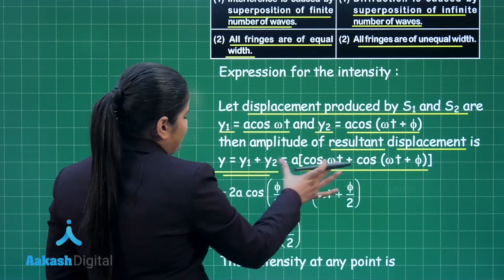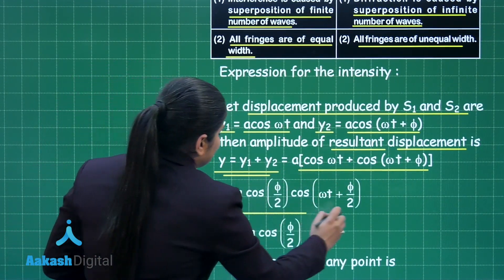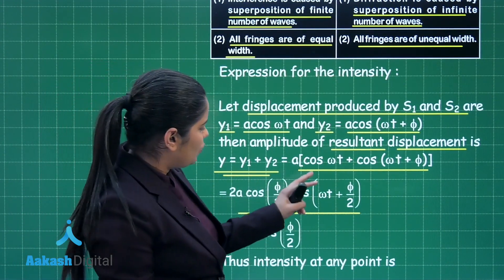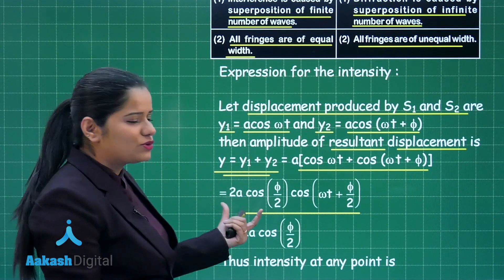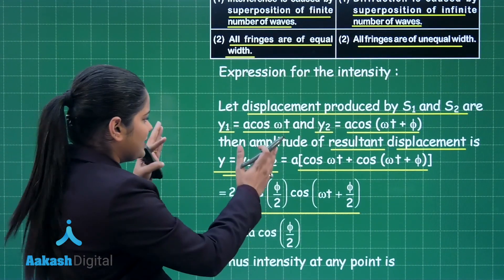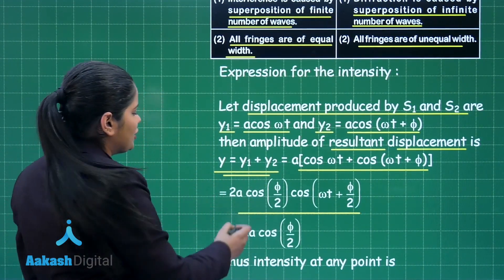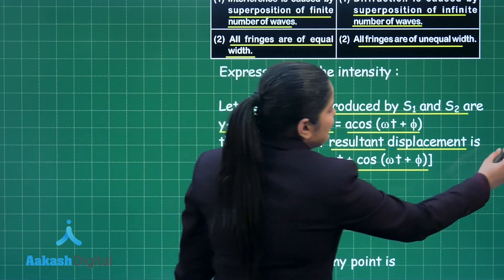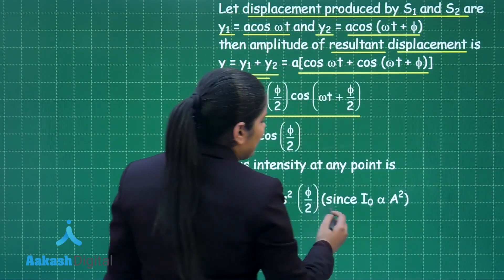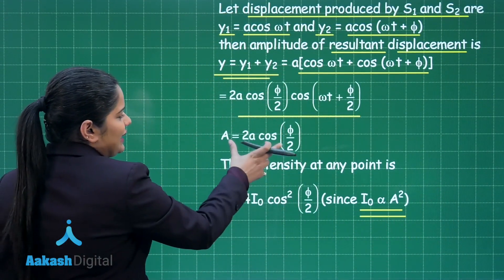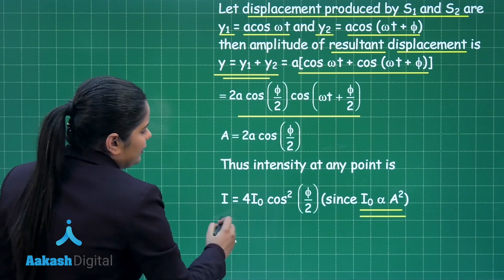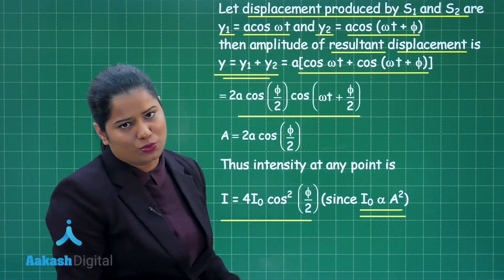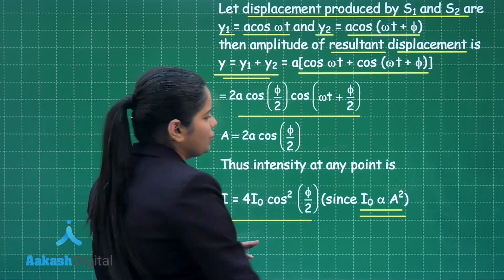When you expand this expression, you get the final result as 2A cos(φ/2) cos(ωt + φ/2). The amplitude of this resultant wave is therefore 2A cos(φ/2). Since intensity is proportional to the square of the amplitude, when you take the square of this, it comes out to be 4I₀ cos²(φ/2). I hope this derivation is quite clear.